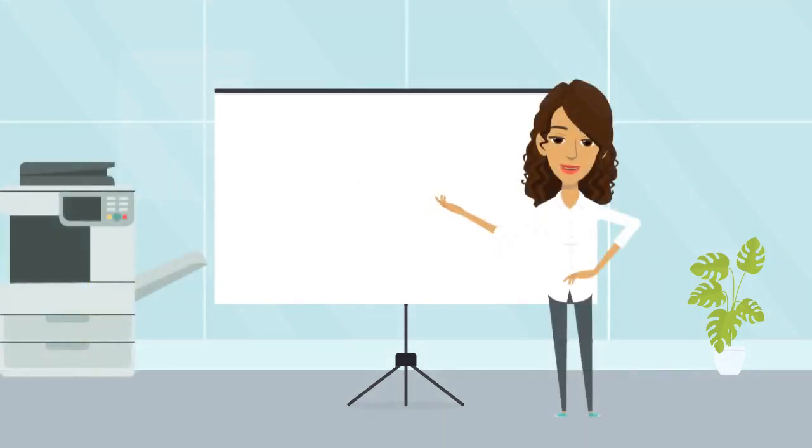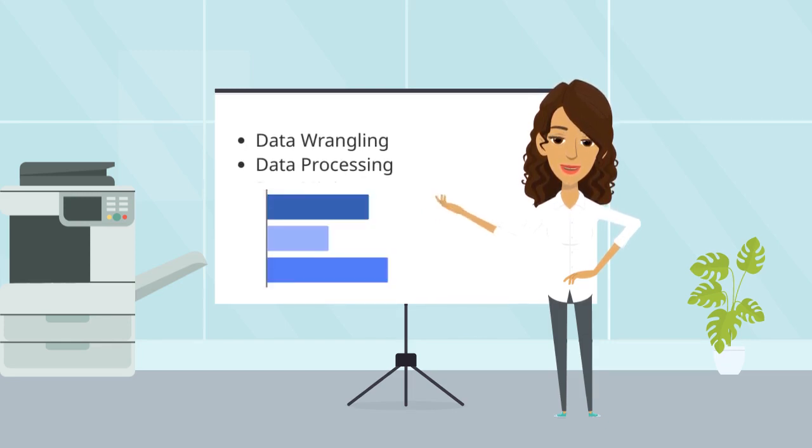When we initialize a data-driven project, the first important thing is to make sure that we have a structured and sufficient data set. This process contains data wrangling and data processing. Data wrangling is to transform the data into a specific format and target structure. Data processing is to clean, restructure, or segment the raw data for further analysis.